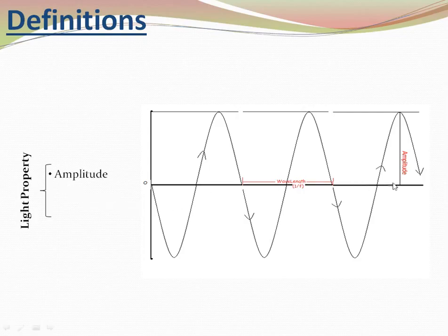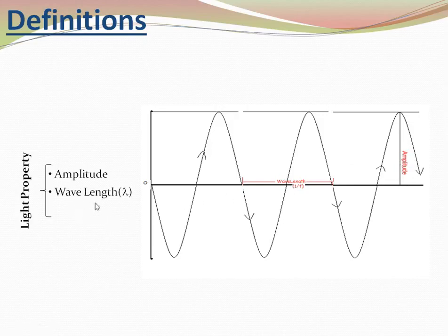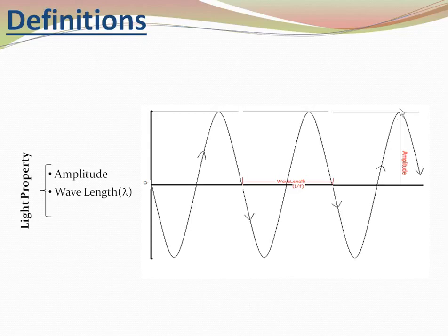First is amplitude. Amplitude is the farthest distance of the light wave from its axis. That distance is amplitude. The other definition is wavelength. Wavelength is the distance between two successive points on a wave — from one crest to the next corresponding crest. The symbol for wavelength is lambda.